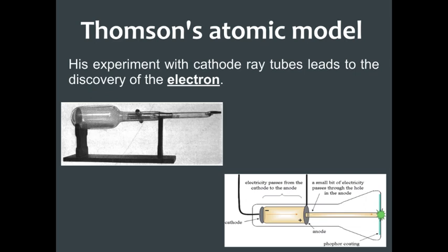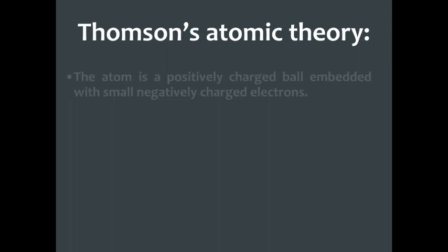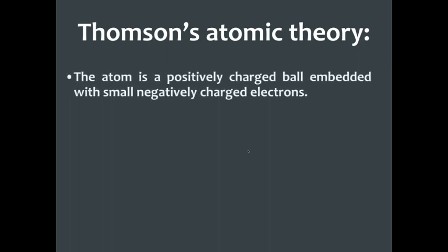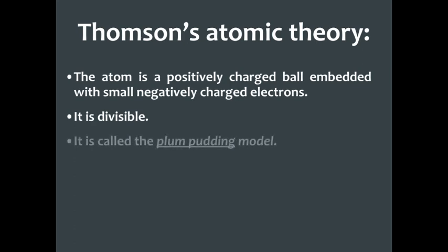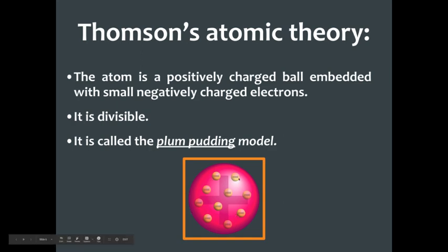So we went from Dalton with a sphere, and now Thompson adds the electron. He said that the atom is positively charged — it's still a sphere — but inside we find electrons that are scattered. It is divisible, because we find electrons inside. Because he was able to determine there were sub-particles, the electrons, there had to be a way to divide the atom. We call this model the plum pudding, or the muffin — it's like a muffin, which is a positive dough with negative raisins in it. So it's a positive sphere with negative electrons floating around in no particular order, with no structure.